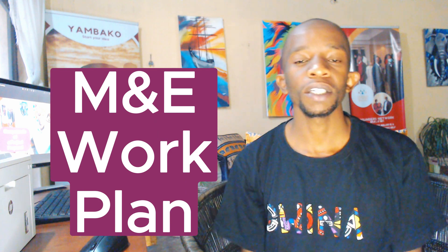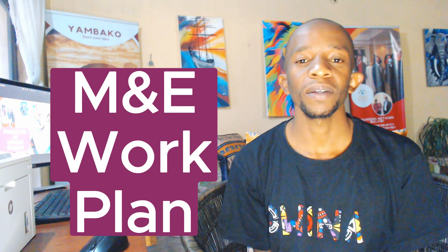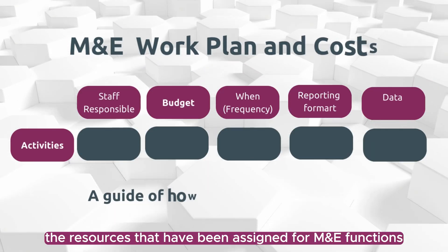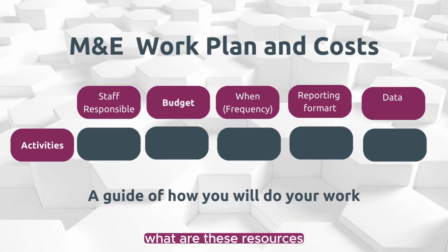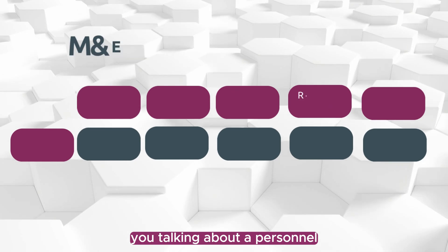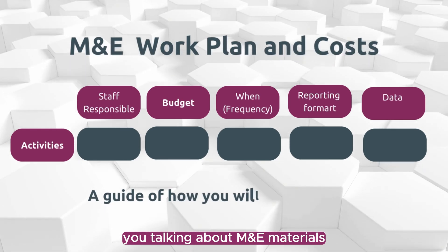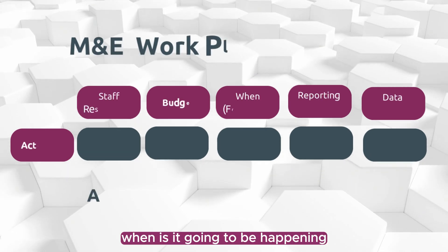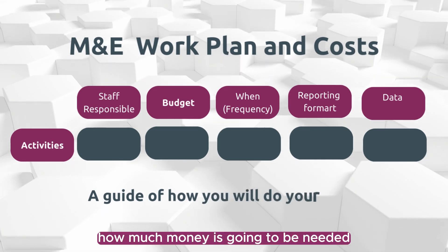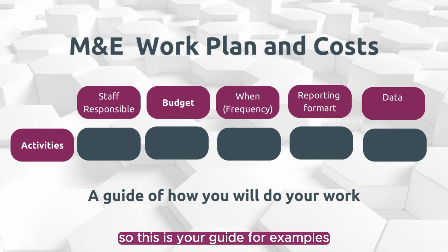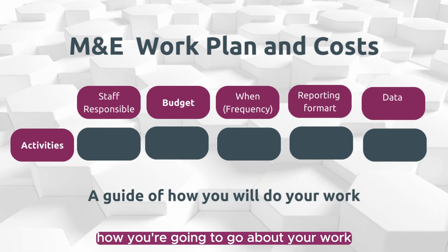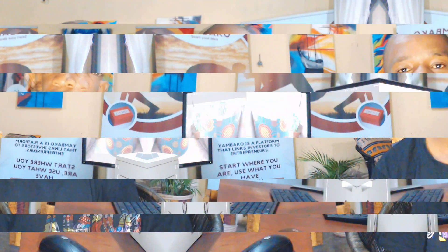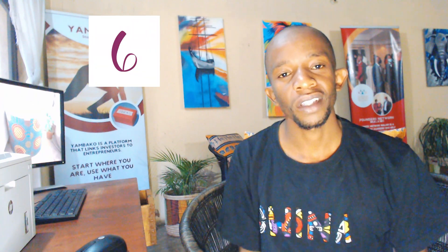The fifth important component is an M&E work plan. An M&E work plan is simply a document that outlines how the resources assigned for M&E functions are going to be utilized. These resources include personnel, materials, and finances — who is going to be responsible for what, when it is going to happen, and how much money is going to be needed. This is your guide as an M&E officer for how you go about your work on a day-to-day basis.